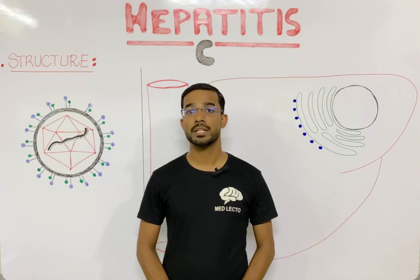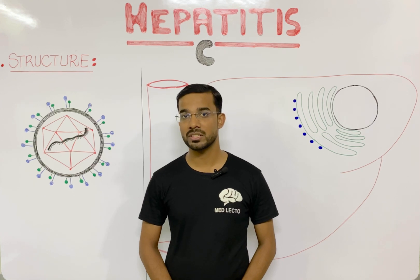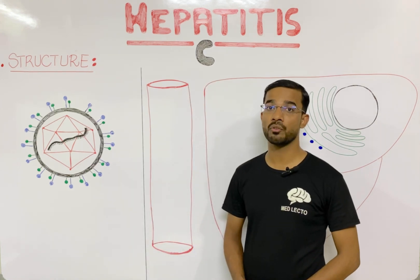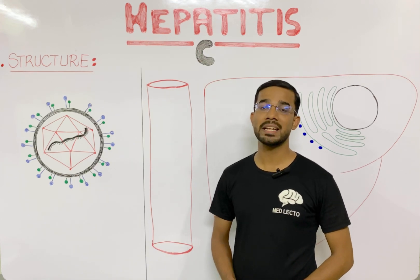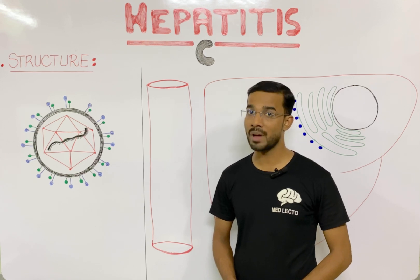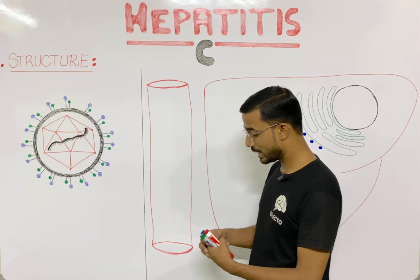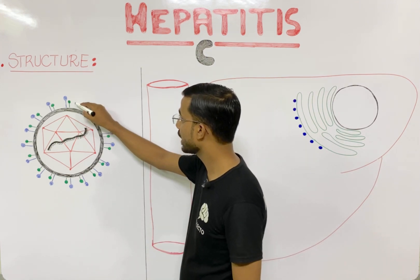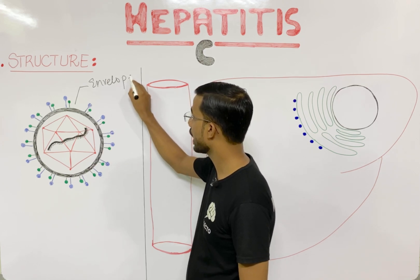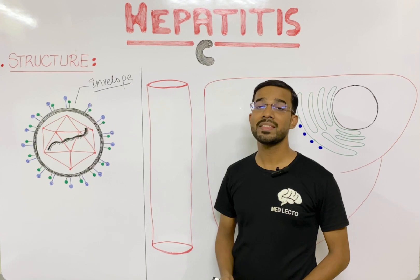In this lecture, we are going to discuss the structures and the replication of the hepatitis C virus. First, we will look at the structure of the hepatitis C virus. Hepatitis C virus belongs to the flavivirus family and it is an enveloped virus, so in the outermost layer you will see the presence of the envelope.